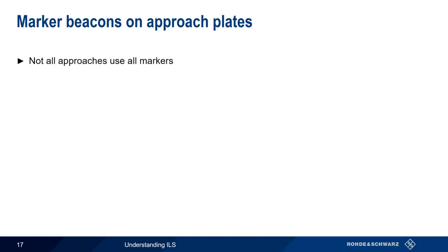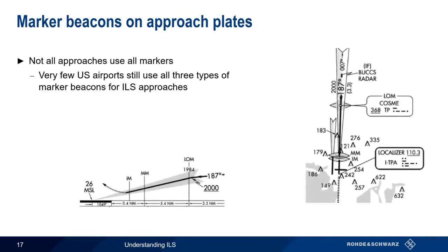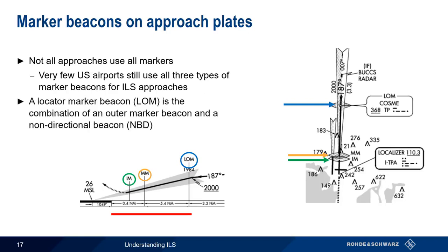It's important to note that not all approaches use all three of these markers. In fact, it's relatively rare to find an approach that uses all three markers, and in some cases, there are even approaches that use no markers. That said, let's look at an approach plate that shows all three markers. Here we see the inner, middle, and outer markers shown. The distances from the runway threshold for each of these markers is also indicated. Note that the abbreviation LOM stands for Locator Marker Beacon, which is a combination of an outer marker and a non-directional beacon, or NDB.